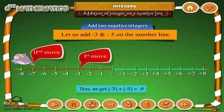Thus, we get minus 3 plus minus 5 is equals to minus 8.